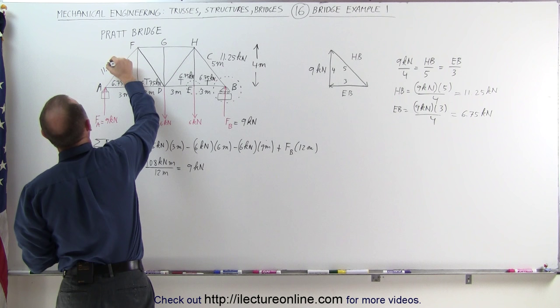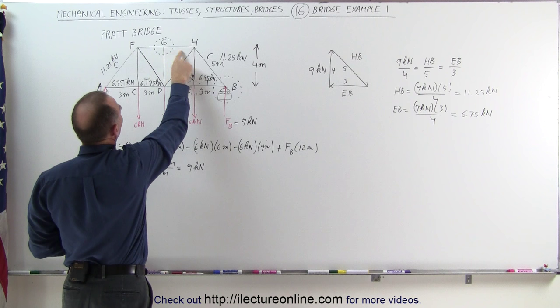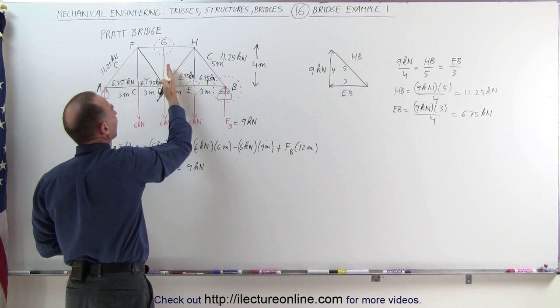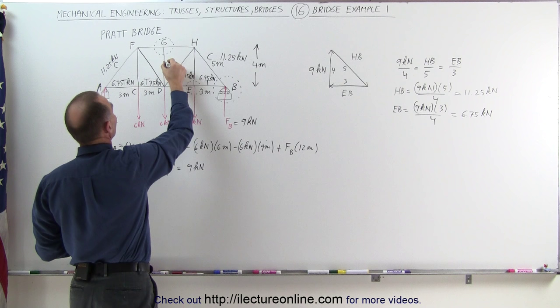Next, let's look at this joint. We probably have forces from F to G and G to H, but there are no forces between G and D because there's nothing to compensate in that direction. If there was compression, the beam would push up with nothing to push back; if there was tension, it would pull down with nothing to pull back. Therefore, there are zero newtons on that beam.